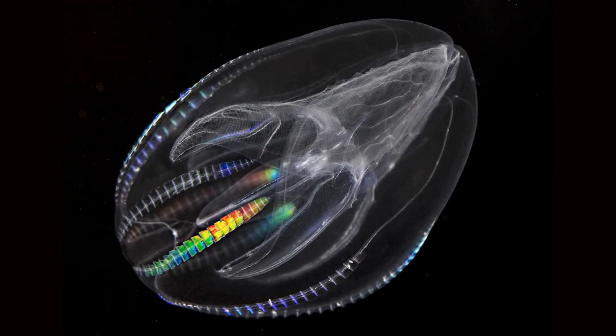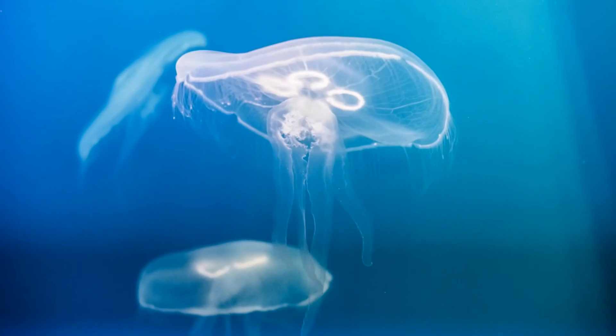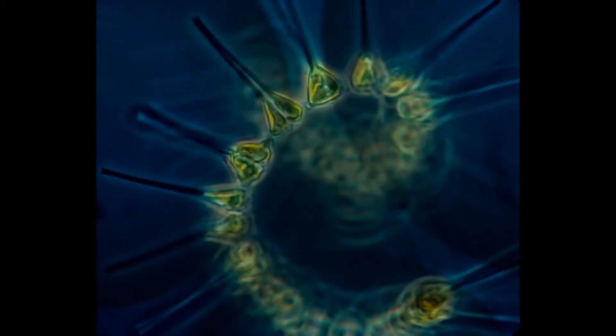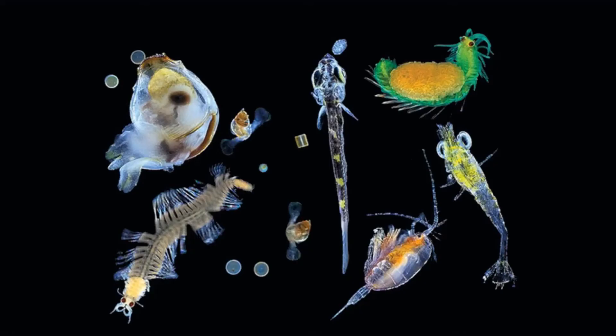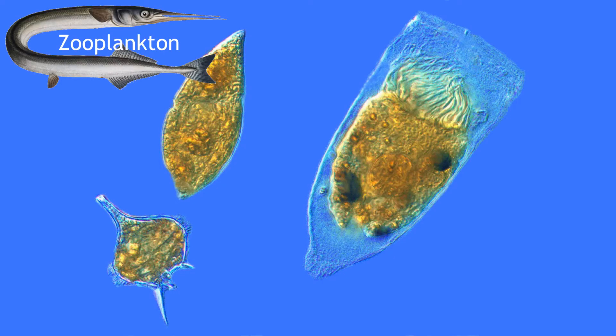The numerous inhabitants of the pelagic environment that are unable to swim against the current are called plankton. They range in size from tiny microbes to big jellyfish. Organisms that rely on photosynthesis in the upper sunlit layer of the ocean are known as phytoplankton. The various animals floating in the water and grazing on those microscopic plants form together the zooplankton.